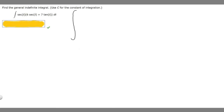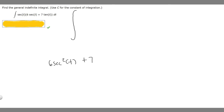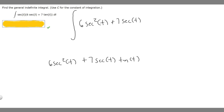Let's start by rewriting our integral by multiplying this out. So secant of t times 6 secant of t gives us 6 times secant squared of t. Then secant of t times tangent of t gives us plus 7 times secant of t times tangent of t dt. Rewriting it this way is going to make it easier to solve.